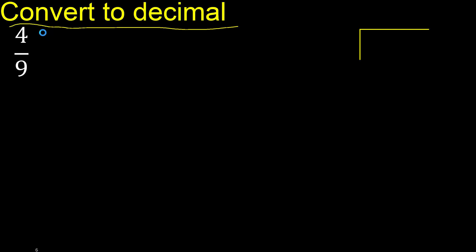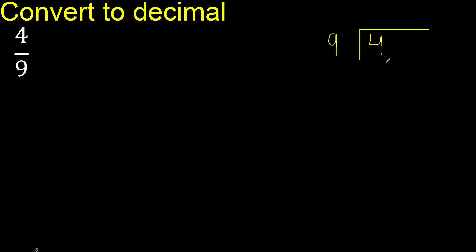4 divided by 9. 4 is less than 9, so we complete with 0 here — 0 point. Bring down a zero: 40 is not less than 9, so we proceed with 40.